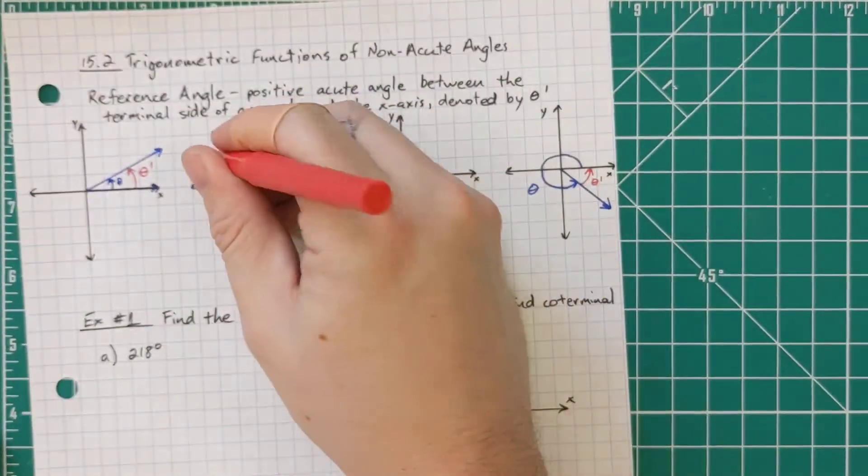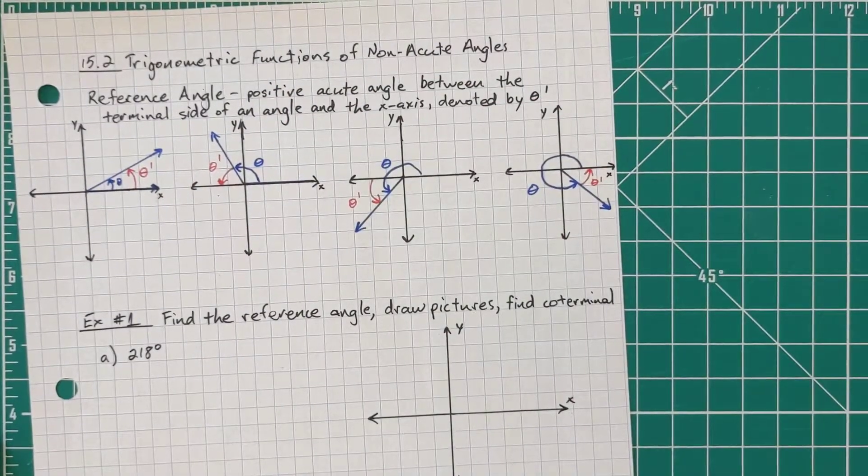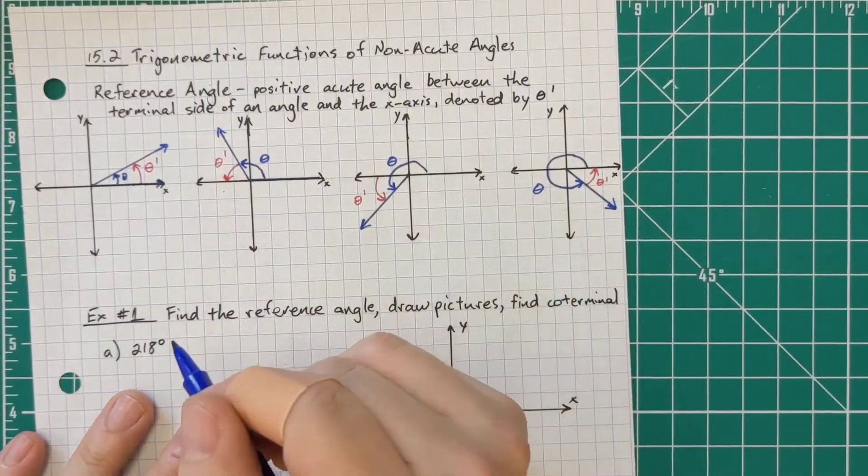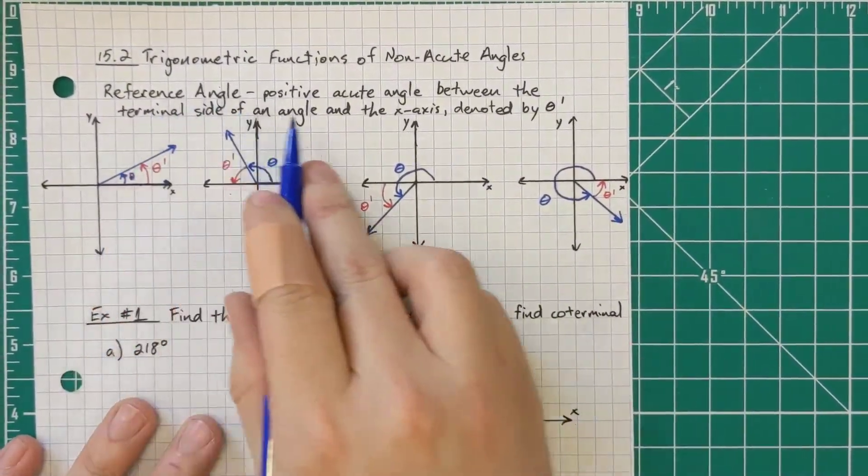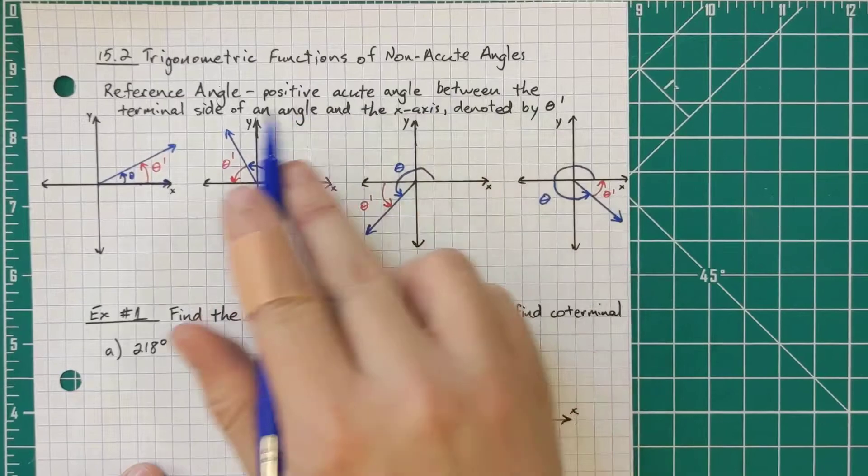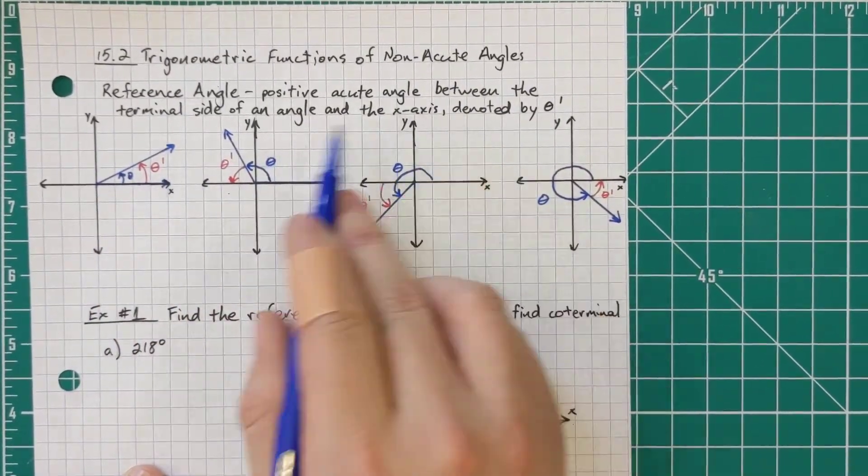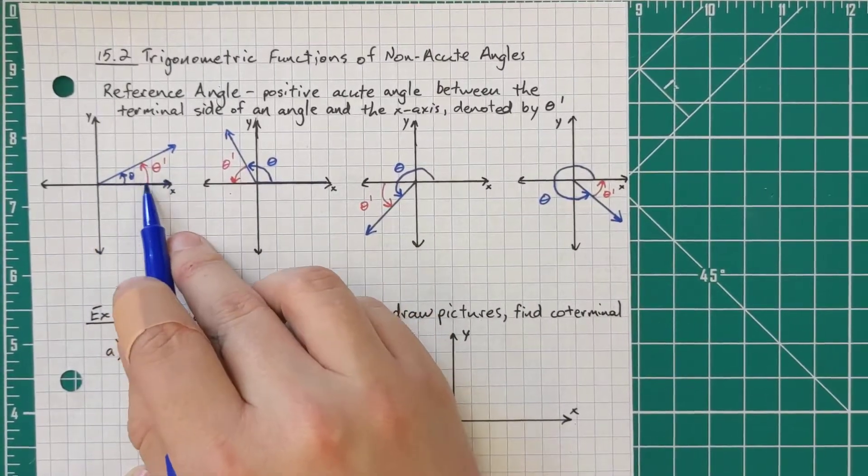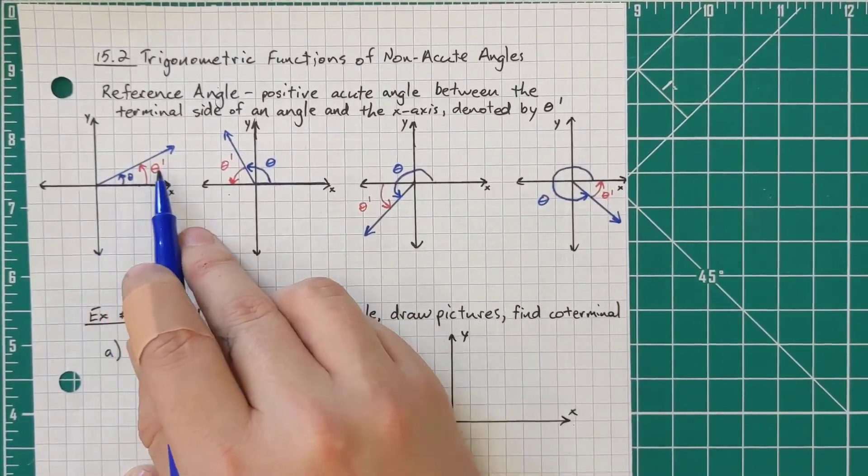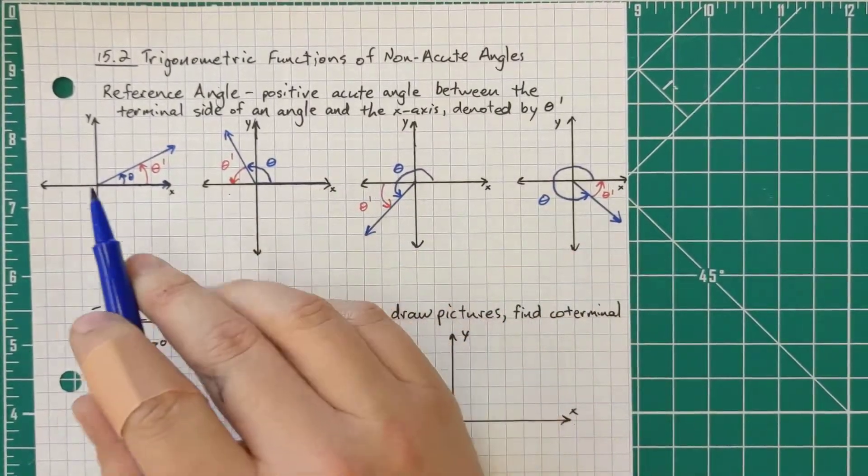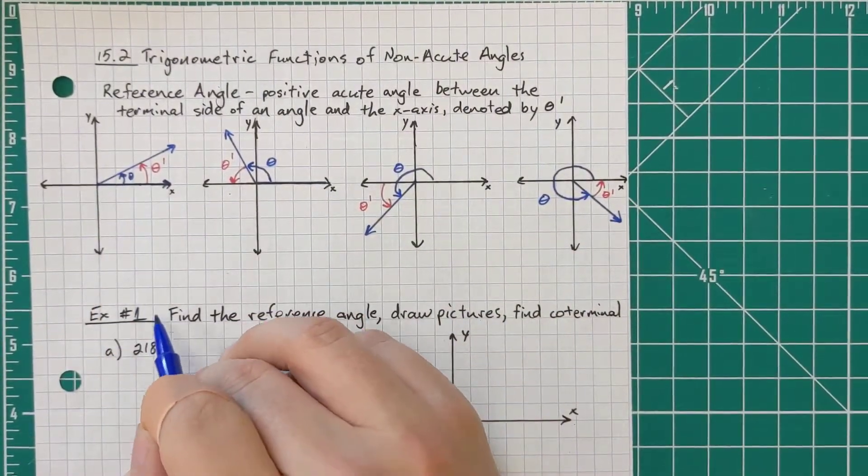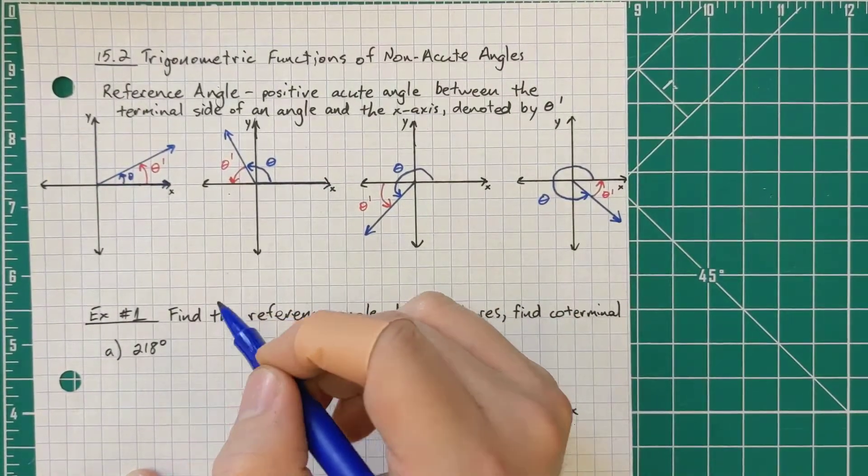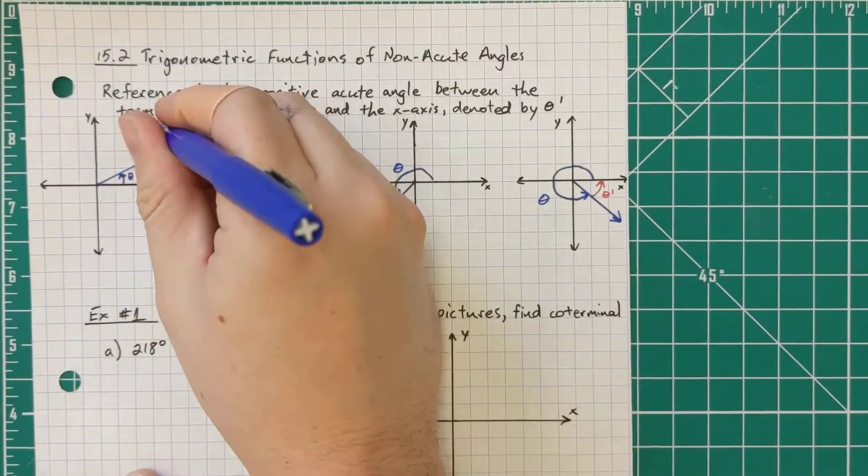If I have an angle in the first quadrant, we need a positive acute angle between the terminal side and the x-axis. So here's my x-axis, there's the terminal side. That's positive. So theta and theta prime are exactly the same in this situation. Sometimes theta and theta prime are the exact same angle, and that's if it's in the first quadrant.